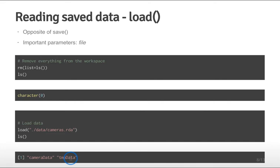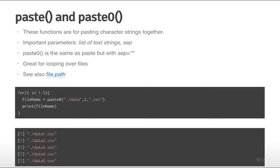Load and save are very useful because you can save multiple R objects into one file and they are all unmodified — when you load them back in, they're exactly the same as when you saved them. Another useful set of commands, not directly for loading files, is for figuring out which files to load, particularly when you have multiple files with a common naming pattern.